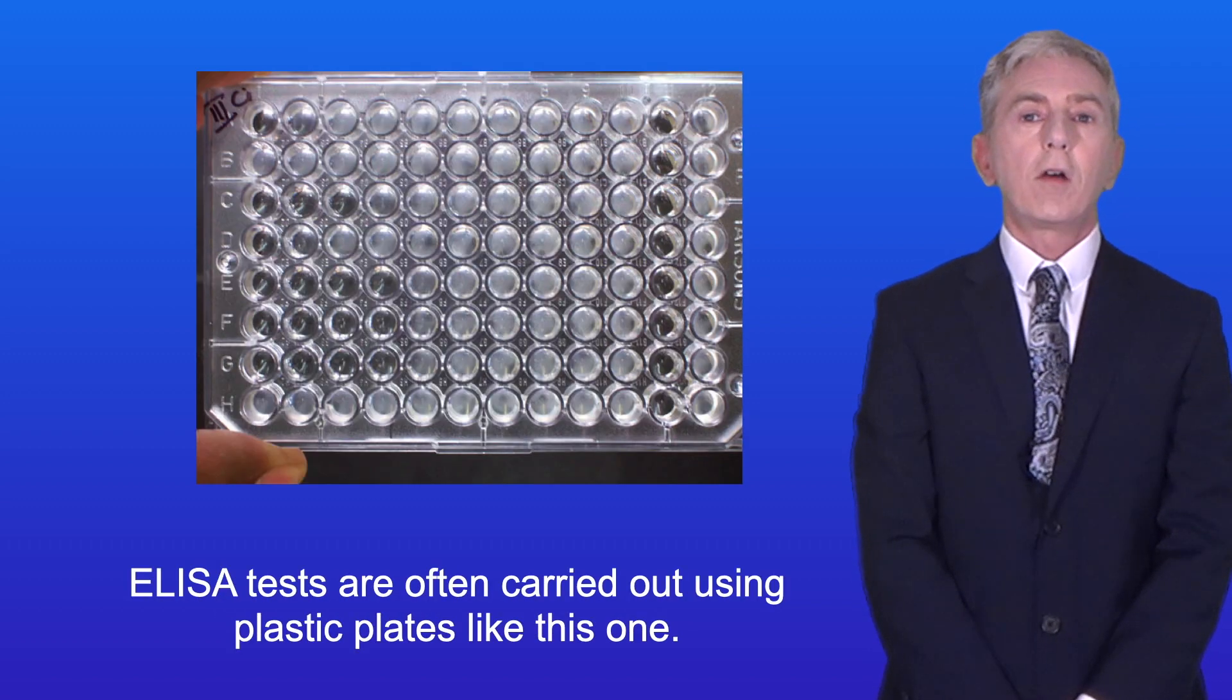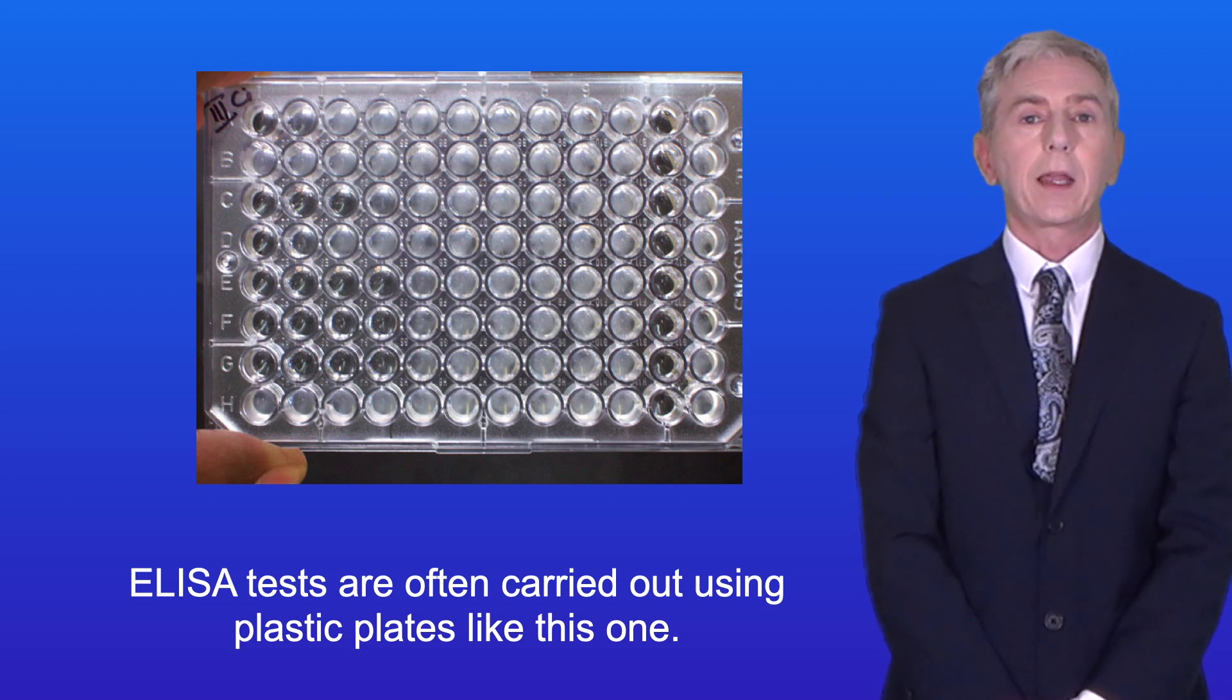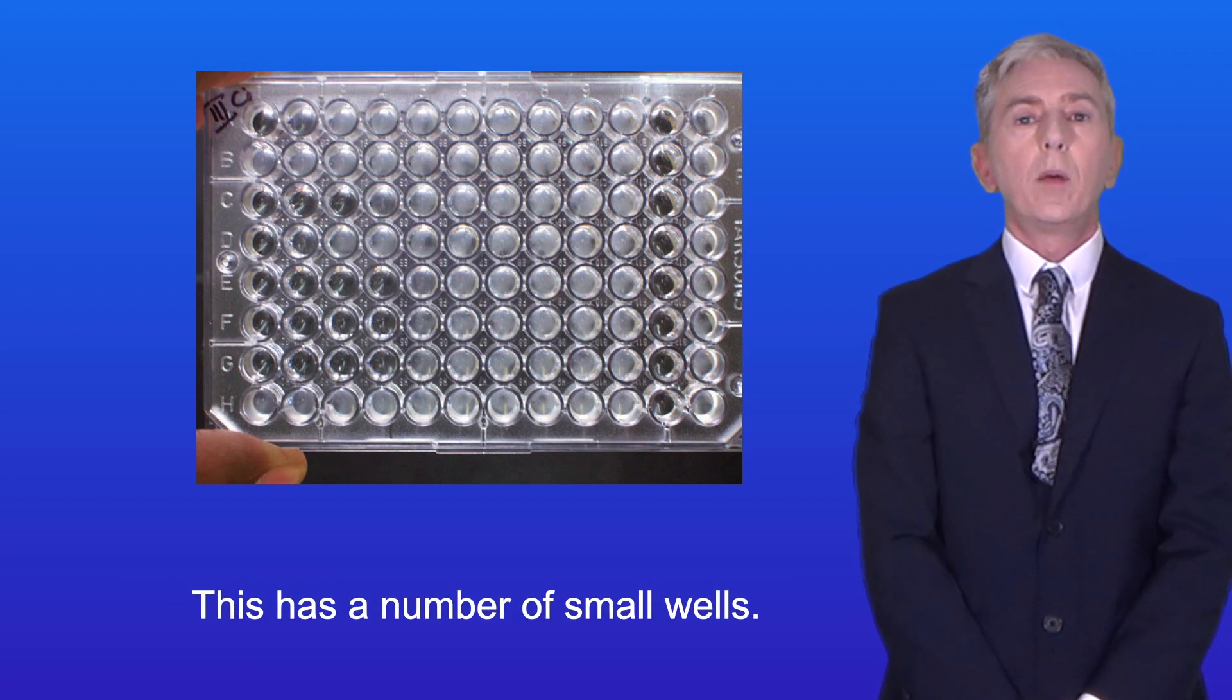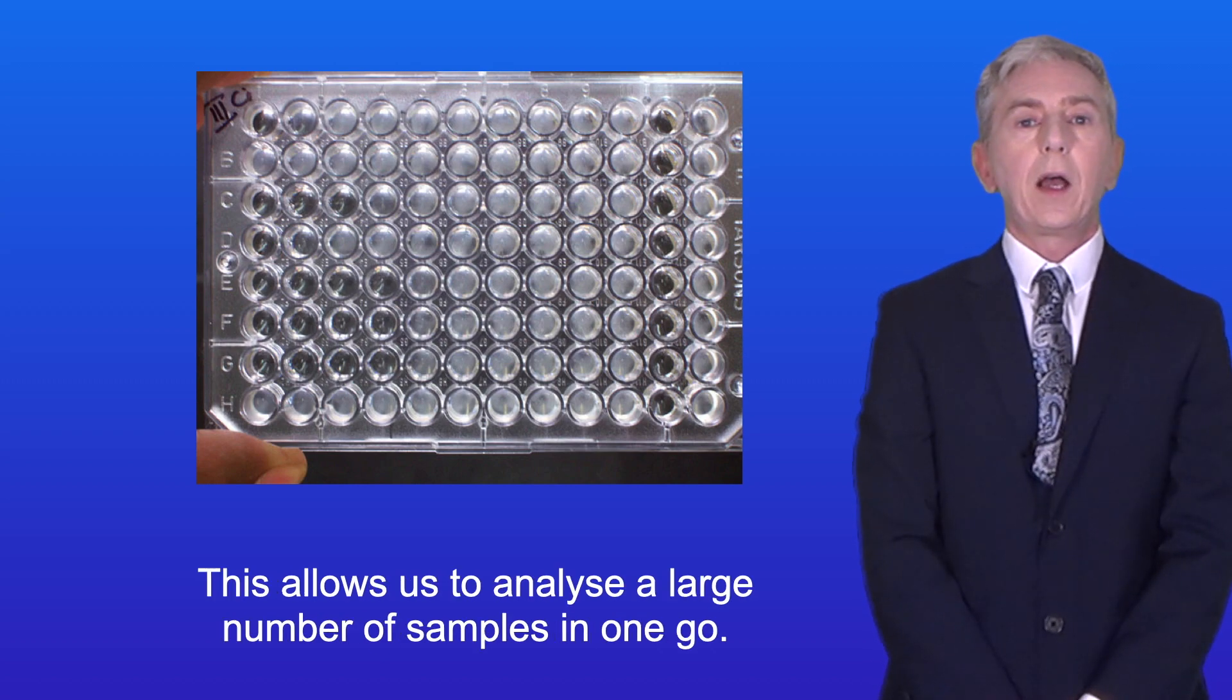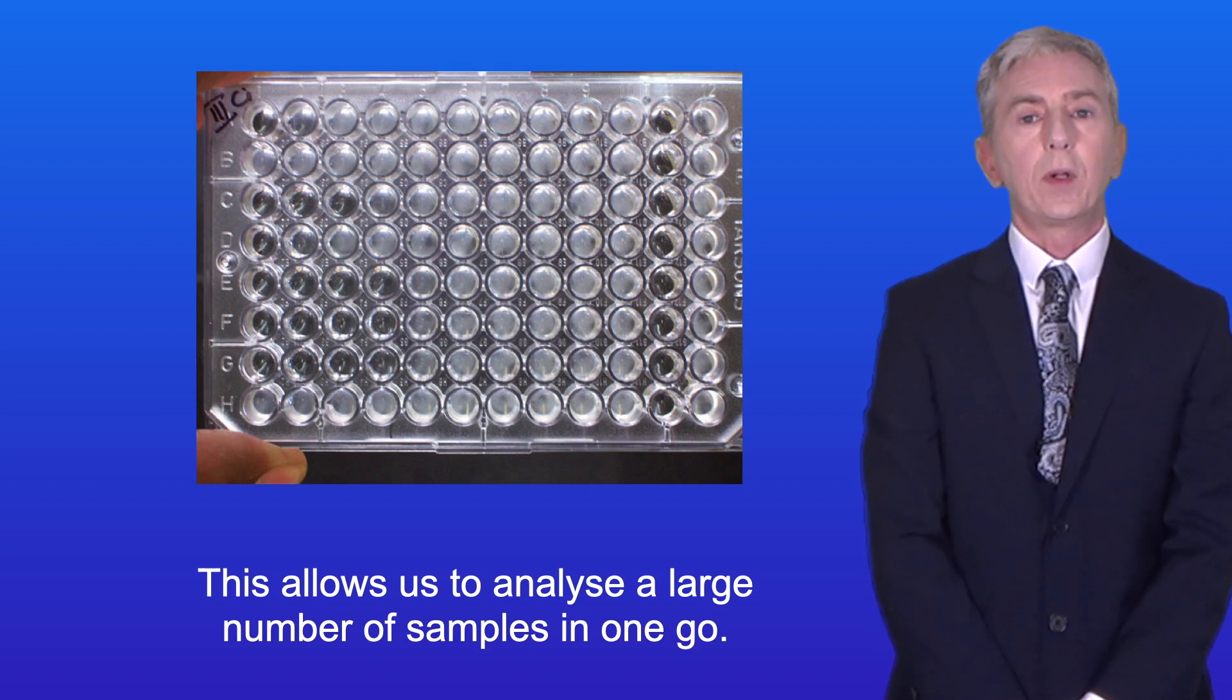ELISA tests are often carried out using plastic plates like this one. This has a number of small wells, and each well will be used to analyze one sample. So this allows us to analyze a large number of samples in one go.